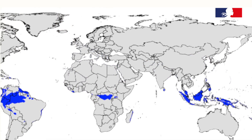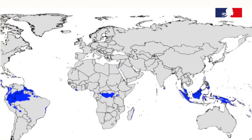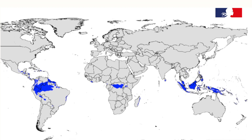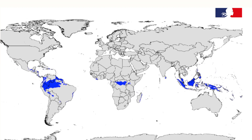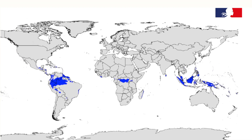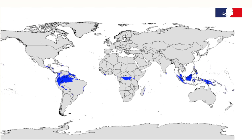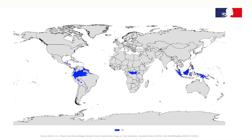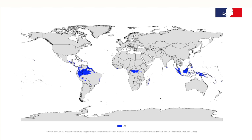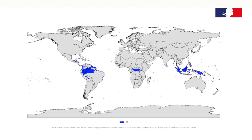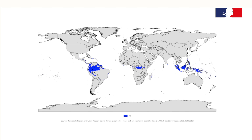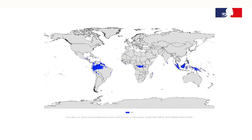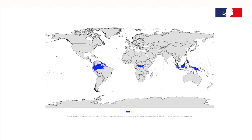Tropical rainforest climate usually occurs 5 to 10 degrees latitude of the equator. All 12 months have average precipitation of at least 60 mm. This climate is dominated by the intertropical convergence zone all year round and thus has no real seasons.